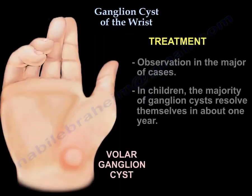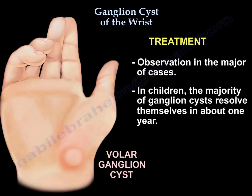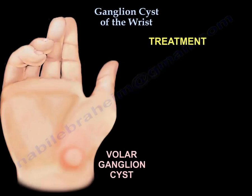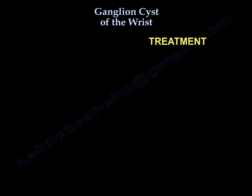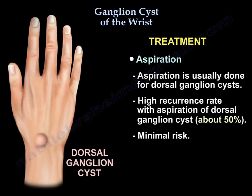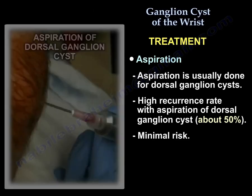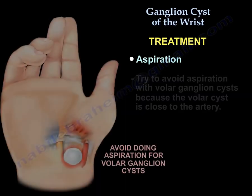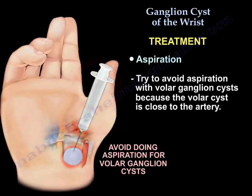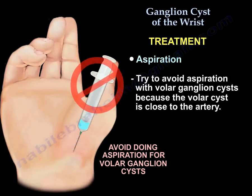Treatment is observation in the majority of cases. In children, the majority of cysts resolve in about one year. You can leave the cyst alone, do aspiration, or do surgery. Aspiration is usually done for the dorsal ganglia and will have about 50% recurrence, but there is minimal risk from the procedure. Avoid aspiration in the volar ganglia because it is close to the artery.